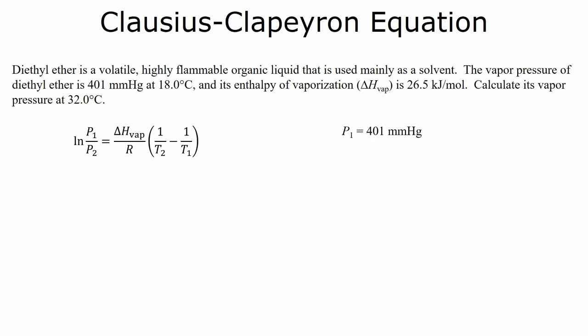So we have our initial pressure, P1. We want to solve for P2. We have our initial temperature, needs to be converted to Kelvin. And we have our final temperature that we want to calculate P2 at.